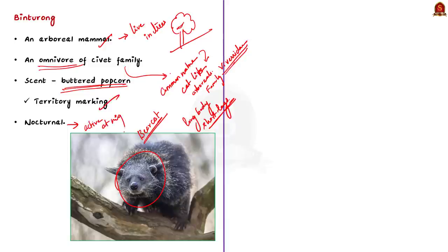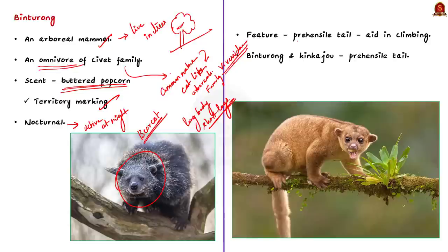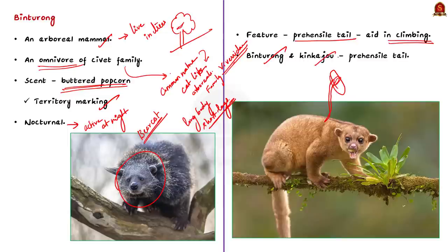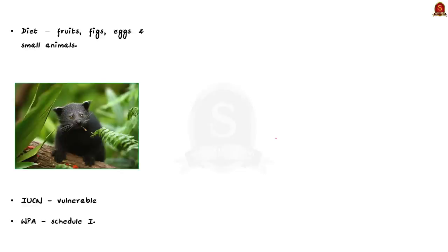Since binturongs live in trees, they are found most often among the trees. They have an interesting feature called a prehensile tail — meaning the tail is capable of holding and gripping things, helping the animal while climbing. Apart from binturong, kinkajou also has a prehensile tail. Binturong is an omnivorous animal, feeding on fruits such as figs, as well as eggs and small animals.